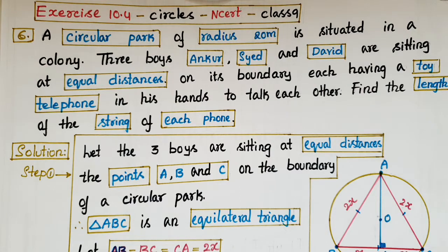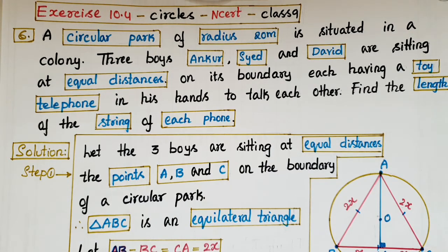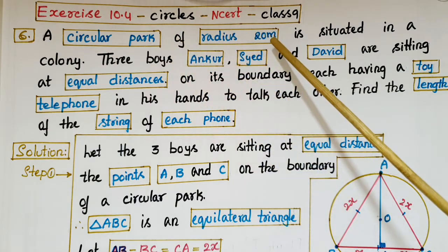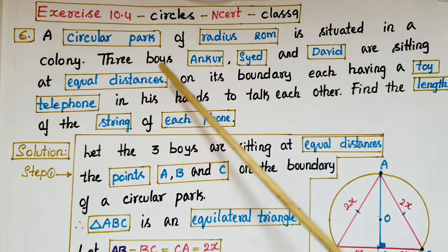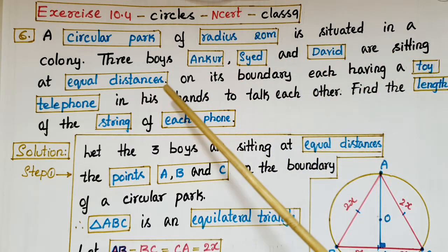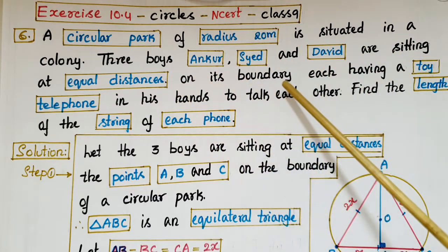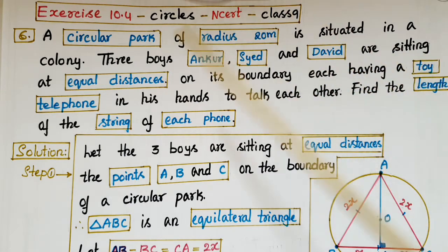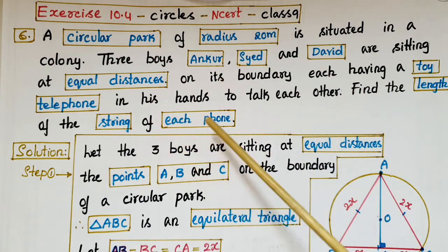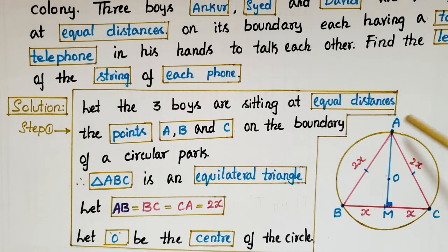Hello everyone, today I am going to tell the solution of problem 6 from Exercise 10.4, the Circles chapter, from NCERT Class 9. The problem: a circular park of radius 20 meters is situated in a colony. Three boys, Ankur, Syed, and David, are sitting at equal distances on its boundary, each having a toy telephone in his hands to talk to each other. Find the length of the string of each phone.